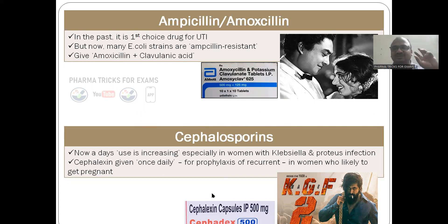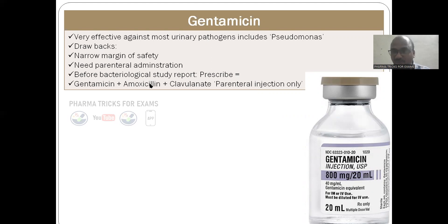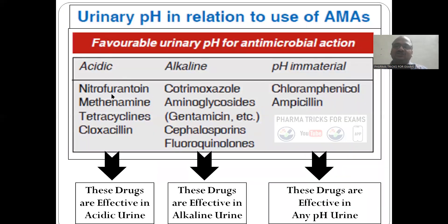Cephalosporins — especially cephalexin — are increasingly used nowadays for UTI. For examination purposes: gentamicin is very effective against most urinary pathogens including Pseudomonas, but drawbacks are the narrow margin of safety and the need for parenteral administration. Before the bacteriological study report comes, you can prescribe gentamicin or amoxicillin plus clavulanic acid combination.